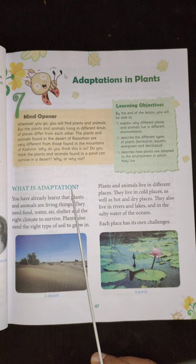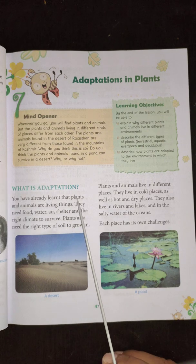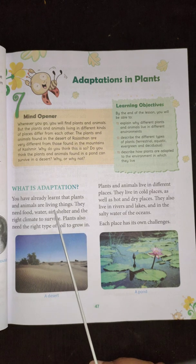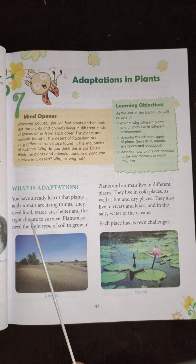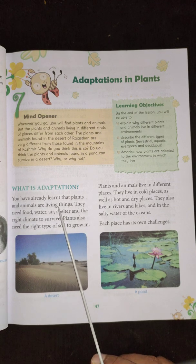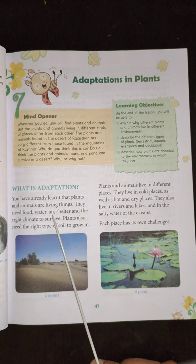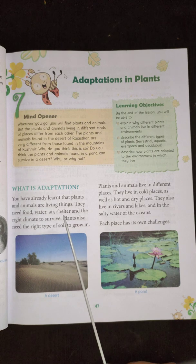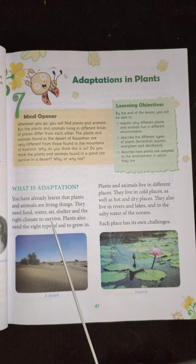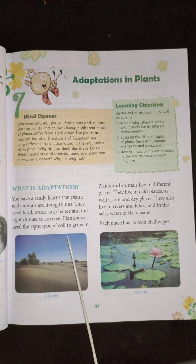Now, what is adaptation? Plants and animals are living things — they need food, water, air, shelter, and the right climate to survive. Shelter means a place to live. Plants also need the right type of soil to grow in.